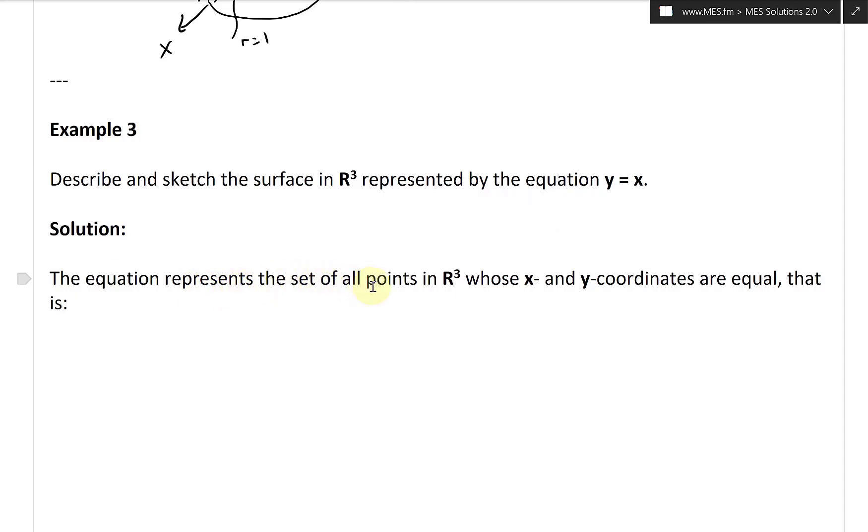So the equation represents the set of all points in R³ whose x and y coordinates are equal. That is, if we write this set out, we'll write it like this: bracket x, and then x, y is x, and then z like that. And again this is because y is equal to x, so we'll write them both as x.